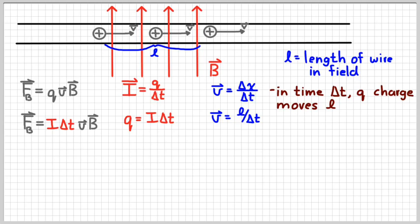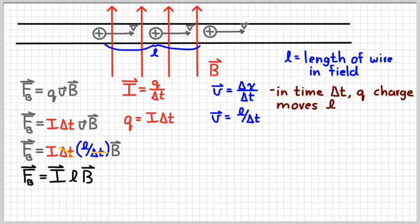So those two delta T's right here and right here are going to be the same. And so that means when I substitute in the L over delta T thing into that equation, I can then cancel out those delta T's. And we get a relatively simple relationship, FB equals ILB. I for current, L for the length of the wire in the field, and B for the magnetic field.